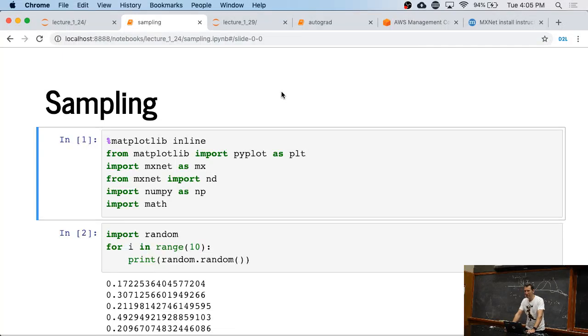Okay, so now let's look at what actually happens when we sample. First and simplest thing I can do is I can just draw random numbers.